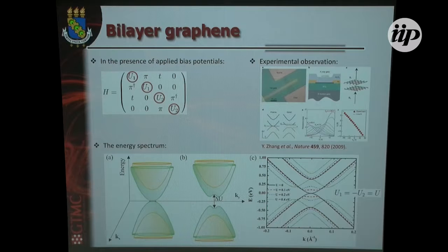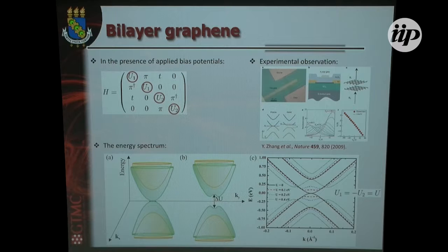When you apply a perpendicular electric field to bilayer graphene, you open a gap, as you can see here. Including this in the Dirac model is just putting these diagonal terms — it's really easy to do. This was confirmed experimentally in a 2009 paper.